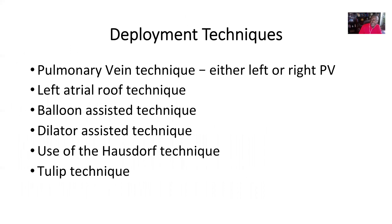There are several techniques that have been described in the literature to try and close these large-sized or technically challenging ASDs with deficient rims. You could use a pulmonary vein technique utilizing either the left or right pulmonary veins, the left atrial roof technique, a balloon-assisted technique, a dilator-assisted technique, a Hustoff sheath, and also the tulip technique. I'll talk about some of these techniques.